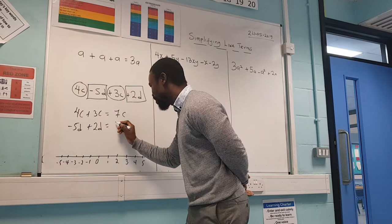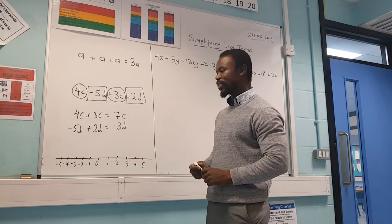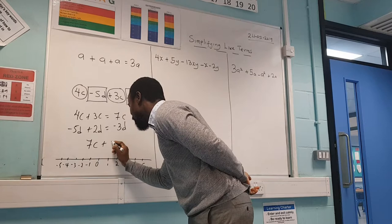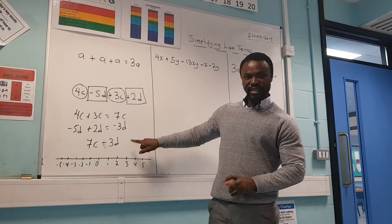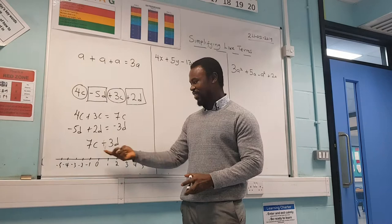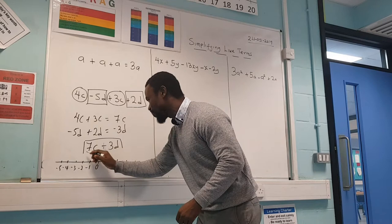When I combine the C letters together I had seven C; combining the D letters together gives minus 3D. I can put the two together: seven C minus three D. We cannot combine C and D further because they are different letters — it's like saying a boy take away a girl, that's not possible. So the simplified form is seven C minus three D.